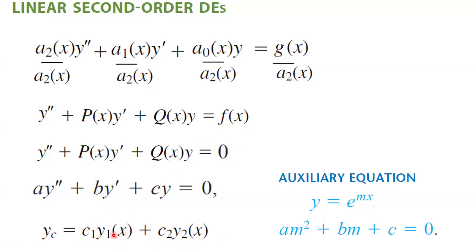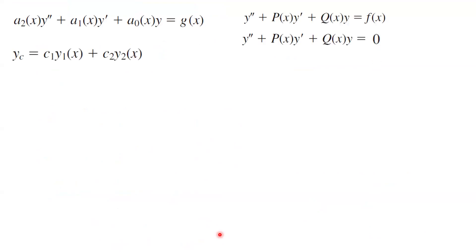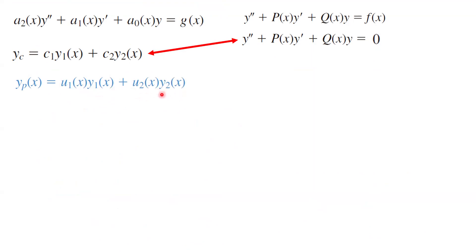Then you're going to use y1 and y2 to find the particular solution using the variation of parameters. So we are rewriting everything. We set the right-hand side equal to 0 and find the complementary solution. Now, the particular solution can be written as u1*y1 plus u2*y2, so your goal is to find u1 and u2.